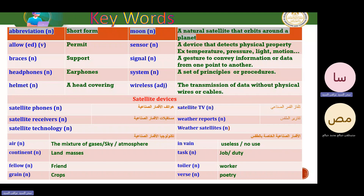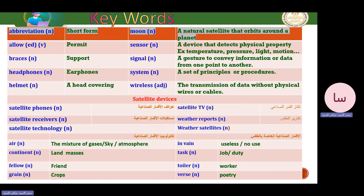Signal is a gesture to convey information or data from one point to another — it's normally not a physical one. System is a set of principles or procedures. Wireless means the transmission of data without physical wires or cables. We are also going to be familiar with satellite devices like satellite phone, satellite receivers, satellite technology, satellite TV, weather reports, and weather satellites — all related to space technology.